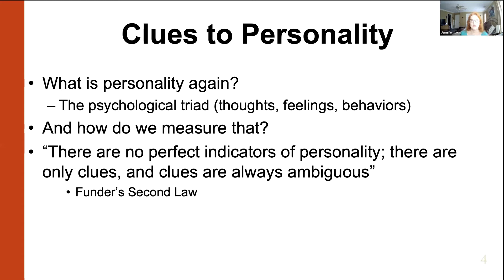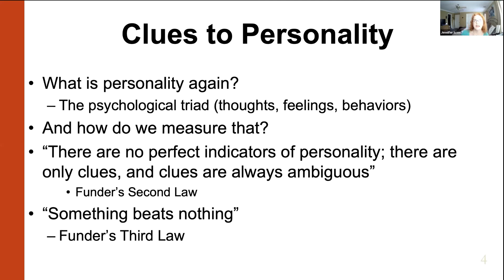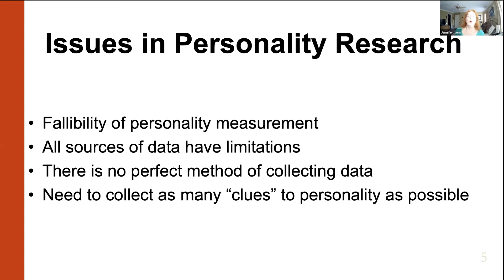Since we don't have any perfect indicators of what a person's like, we need to collect as many of those clues, as many pieces of data as possible, because something beats nothing. Having some data, even if it's biased, at least gives us some information about that person. One big issue is that measurements can be flawed — even a good friend giving an informant report is biased, and we're even biased when answering self-report.